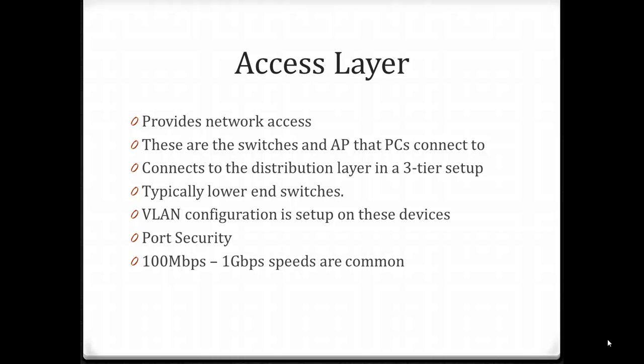The first layer is the access layer, which provides network access to our devices. This layer is closest to our end user devices. At the access layer are switches and access points that our PCs, cell phones, PDAs, or other smart devices connect to. The access layer then connects up to the distribution layer in a three tiered setup. Typically at the access layer we're using lower-end switches — maybe 2960 switches — that have 100 megabit or gigabit per second connection uplink ports. VLAN configuration is typically set up on these devices, and port security is usually configured here as well. Between 100 megabit and 1 gigabit per second speeds are common.